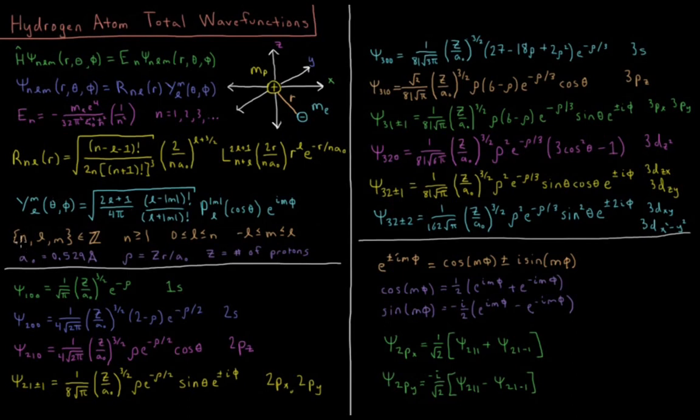Before we go on as well, the quantum numbers n, l, and m, they're all integers. n is greater than or equal to 1. We saw it starts at 1, goes up from there. For a given value of n, we can determine the allowed values of l. It goes from 0 to n-1. For a given value of l, we can determine the allowed values of m. m goes from -l to l, again, all three being integer values.